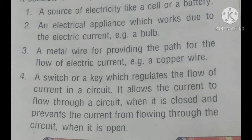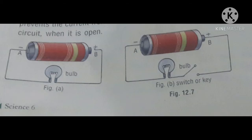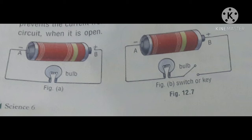Closed circuit means the switch is on, and open circuit means the switch is off. Now, children, watch figures A and B very carefully. In figure A, the negative terminal of the cell is connected to a wire, but the positive terminal is not connected, so the circuit is incomplete and the bulb does not glow. In figure B, positive and negative terminals are connected but the key switch is open, so the circuit is also called an open circuit. In an open circuit, the appliances will not work, and in figure B the bulb is not glowing.